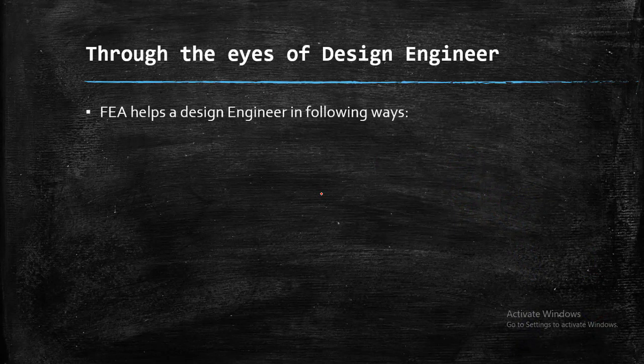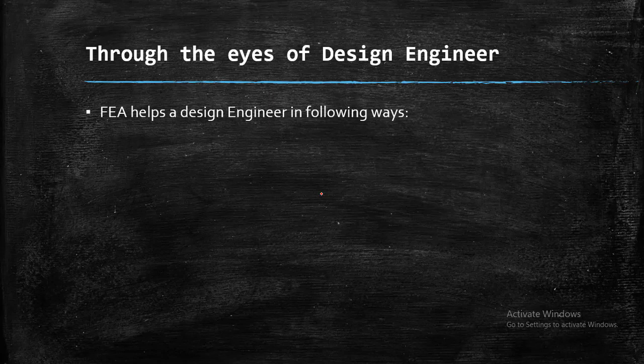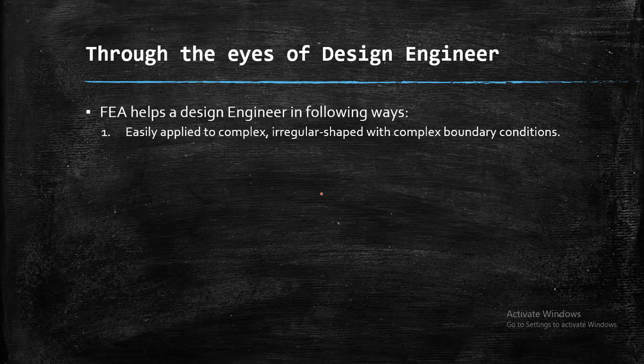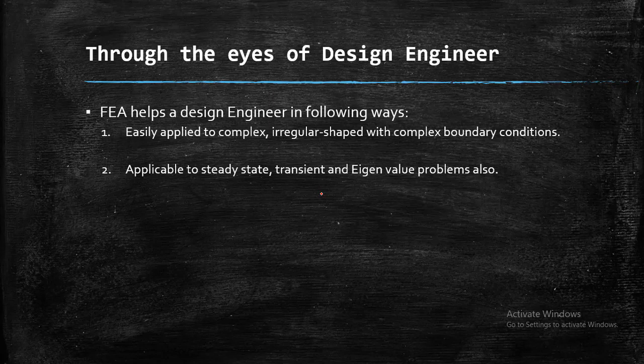So now, FEA through the eyes of the design engineer. In which ways is FEA going to help a design engineer? FEA easily applied to complex irregular shapes when the geometry is irregular and with the boundary conditions somewhat complex in nature. So in these cases, FEA comes into picture and helps the design engineer. FEA is applicable to steady state, not just steady state, but transient and eigenvalue problems also. So the range of problems is quite high.